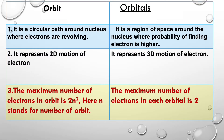The maximum number of electrons in each orbit is 2n², where n stands for the number of the orbit. But in orbitals, the maximum number of electrons in each orbital is only 2.